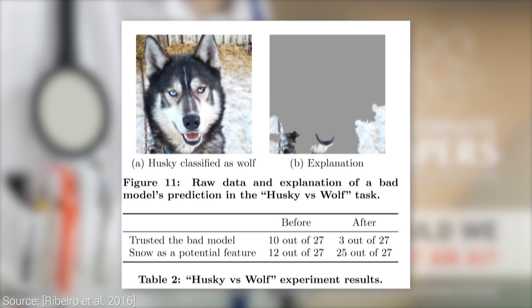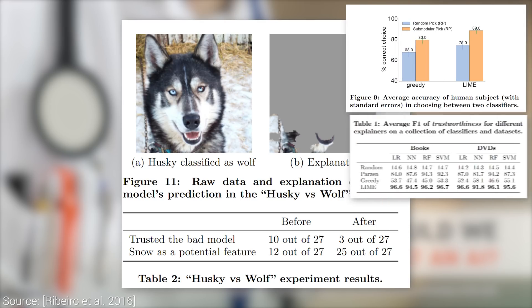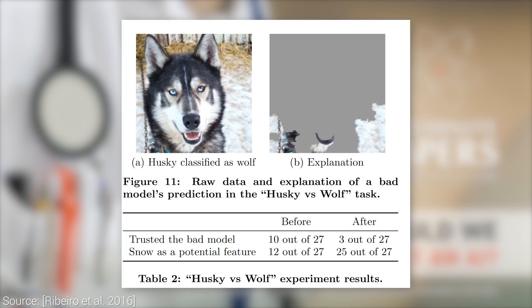And here, in this example, with the additional explanation, it is rather easy to find that we have a bad model that looks at the background of the image and thinks that it is the fur of a wolf. The tests indicate that humans make significantly better decisions when they lean on explanations extracted by this technique. The source code of this project is also available. Thanks for watching and for your generous support, and I'll see you next time!